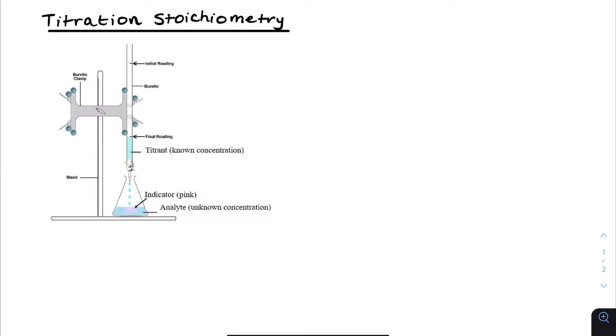It allows us to calculate the initial and final readings correct to 0.05 centimeters cubed. The analyte, which is usually about 25 centimeters cubed, is measured using a pipette and pipette bulb. It's very precise measuring equipment, though it only measures one measurement, usually 25 centimeters cubed. It draws up the analyte and releases it into this conical flask.